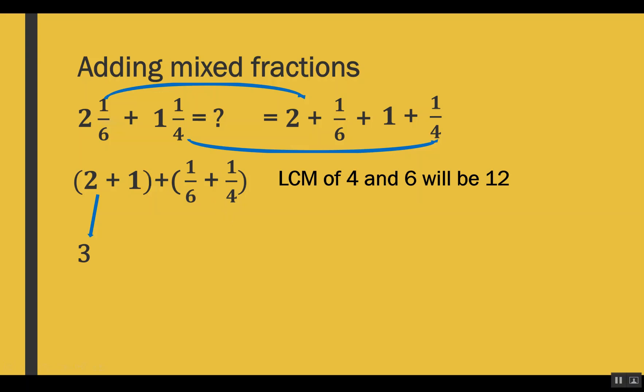We use the LCM to make the denominators the same. The LCM of 4 and 6 is 12. To make 6 into 12, we multiply by 2 — but in a fraction, we can't multiply only the denominator, as it would change the value. So whatever operation we do in the denominator, we must do in the numerator as well. We multiply numerator and denominator of 1/6 by 2. For 1 out of 4, to make 4 into 12, we multiply numerator and denominator both by 3.